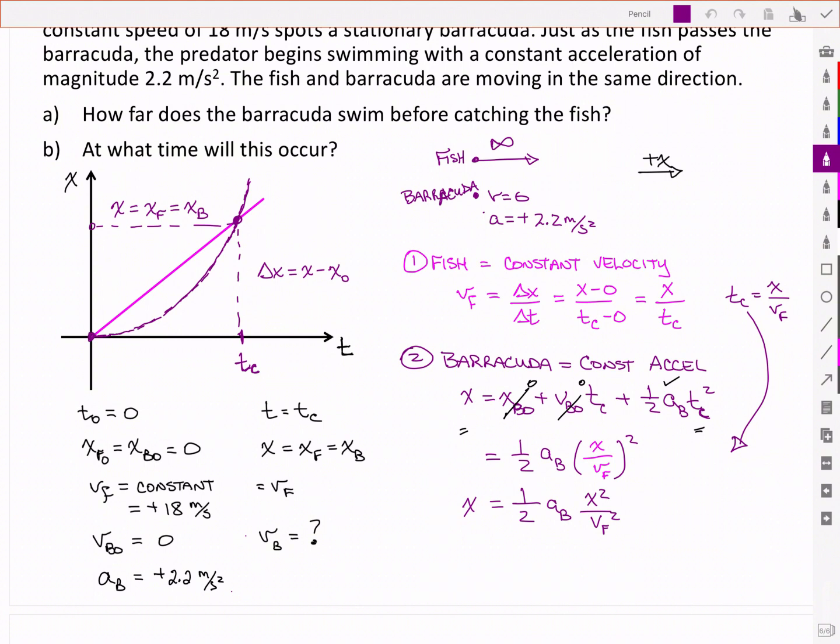And so I can simplify it by getting rid of one of them. So I've got one side equal to one. And I'm going to solve for that x, such that x equals twice the final velocity divided by acceleration.